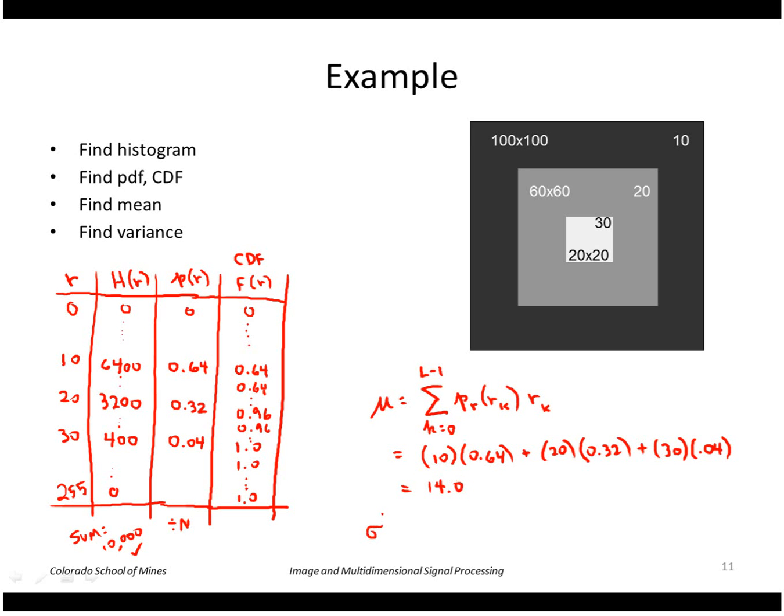Similarly, we could do the computation for the variance, which says that we have to sum again over all these values of R minus mu. And if you do that computation, I believe you get 32.